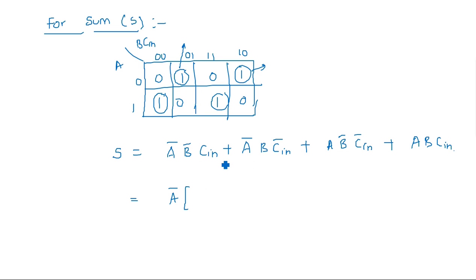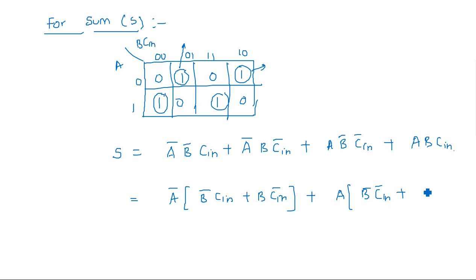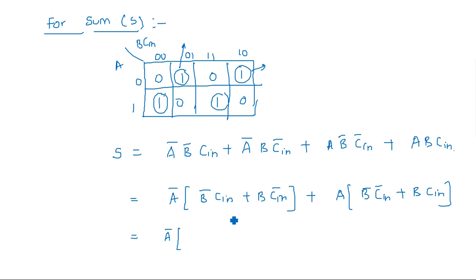We can simplify this expression by taking A̅ common from the first two terms: A̅(B̅Cin + BCin̅) + A(B̅Cin̅ + BCin). The expression B̅Cin + BCin̅ is the XOR operation between B and Cin, since XOR of A and B equals A̅B + AB̅. So the first bracket is B XOR Cin.